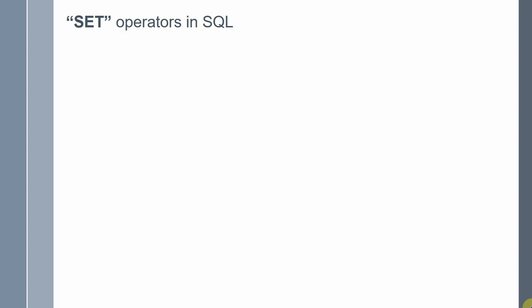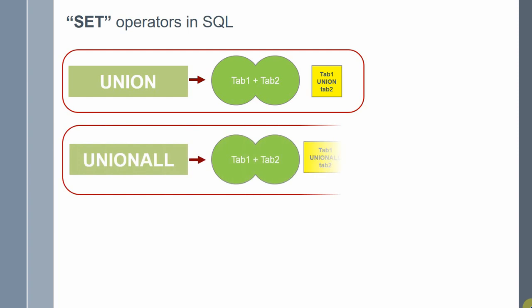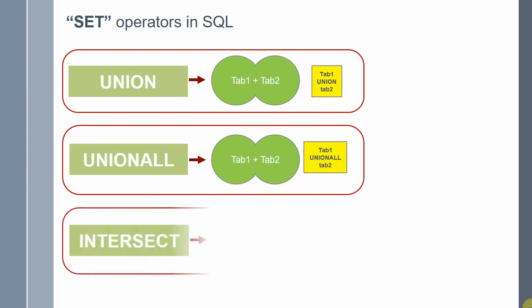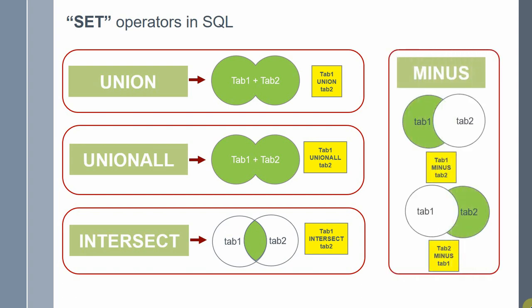Let me give you a quick overview about the set operators in SQL, because functionally this is very much similar to the multiset operator. The only difference is the set operator will work on the result set of an SQL, whereas the multiset operator will work on the elements of the collection. So here are the four set operators available in SQL. The first one is union. Union will combine the result set of two queries, remove any duplicates, sort the result, and return the result set. Then we have union all, which just combines the result set of two queries and returns it without removing duplicates or sorting.